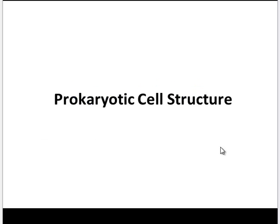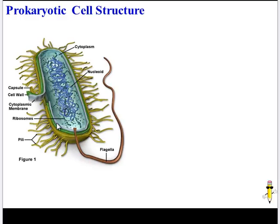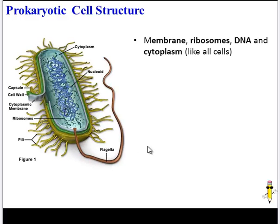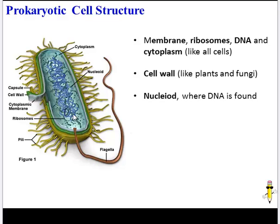Let's start by reviewing the structure of a prokaryotic cell. Here's a typical bacterial cell. Many things are in common with eukaryotes — they have a cell membrane, ribosomes, DNA, and cytoplasm. Prokaryotes also have a cell wall surrounding the cell membrane. They have a region in the center where the DNA is found, called the nucleoid. The nucleoid is not a separate compartment like the nucleus; it's just a space within the cell.